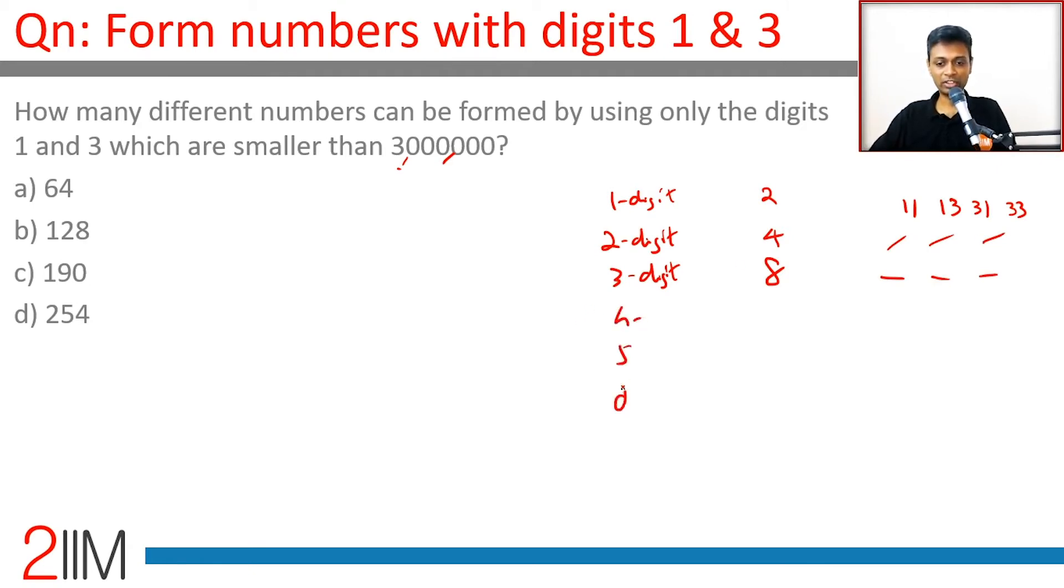Four digit, five digit, six digit, all of these we can calculate. Four digit numbers, five digit numbers, six digit numbers: this will be 16, 32, 64. Add all of this up: 64 plus 32 is 96, 112, 120, 124, 126.